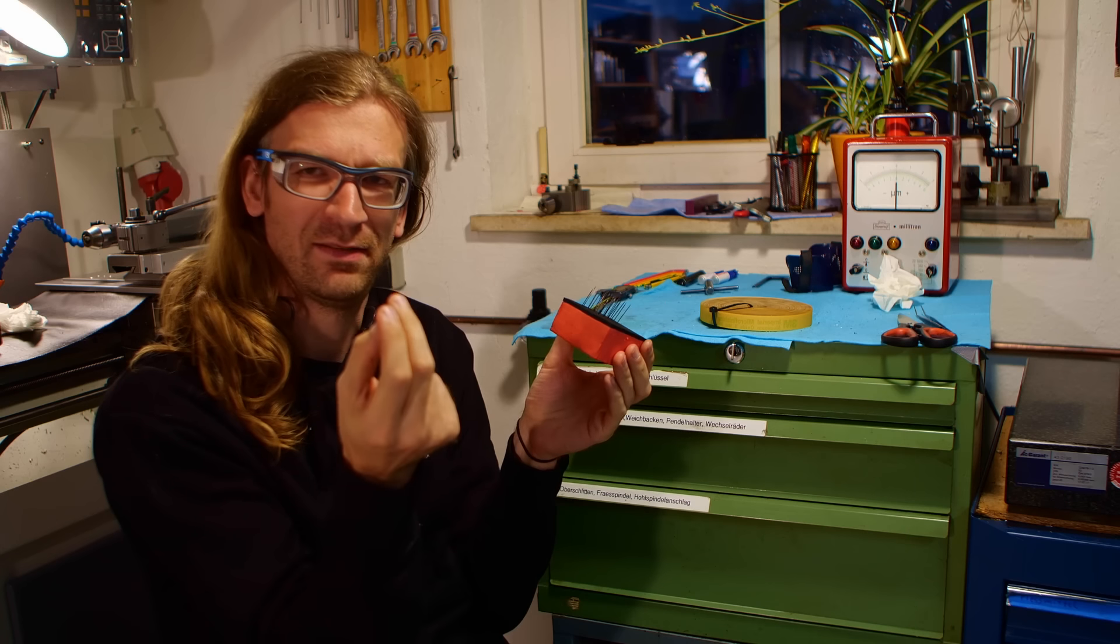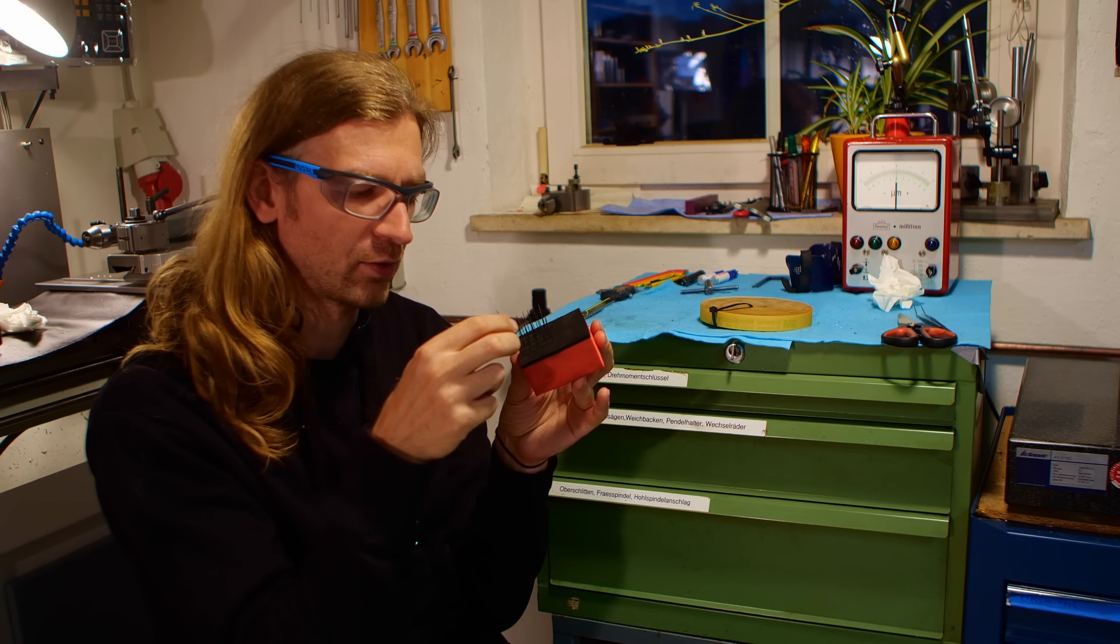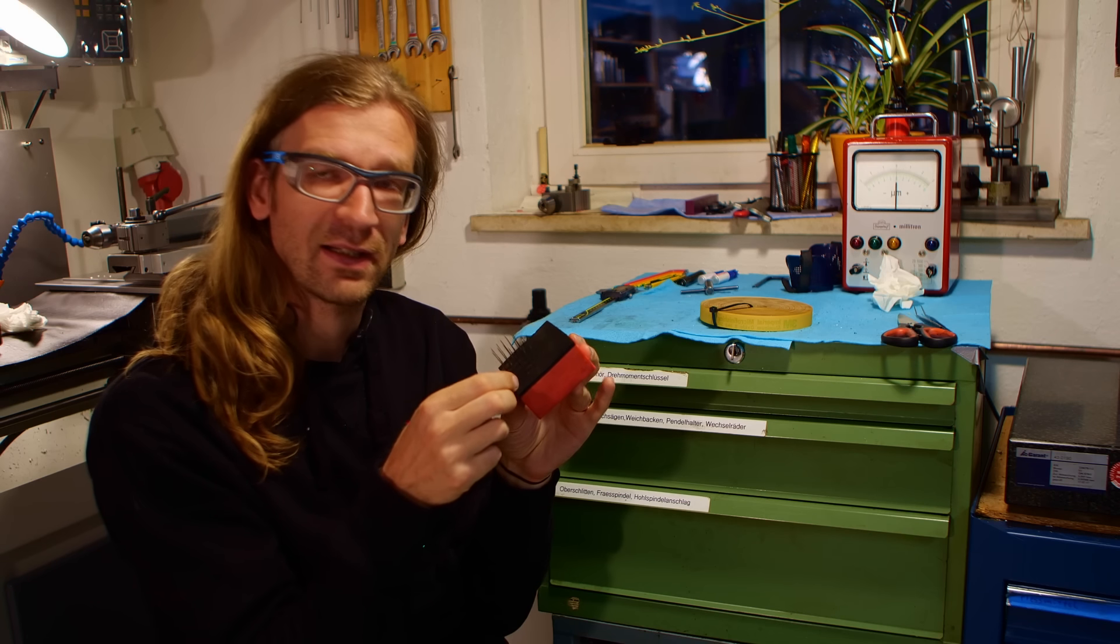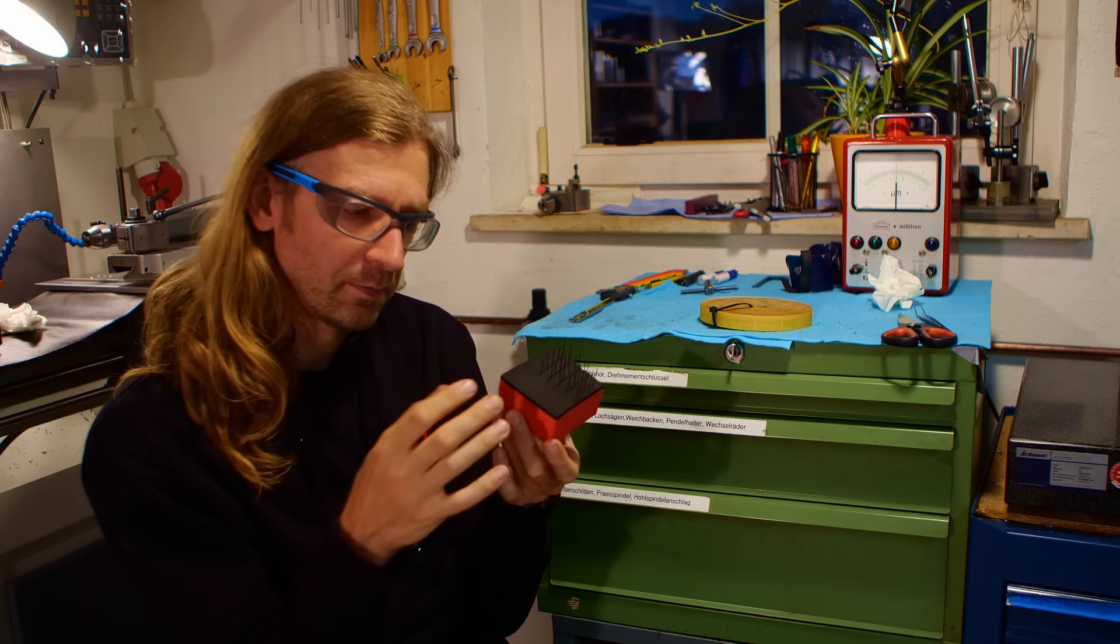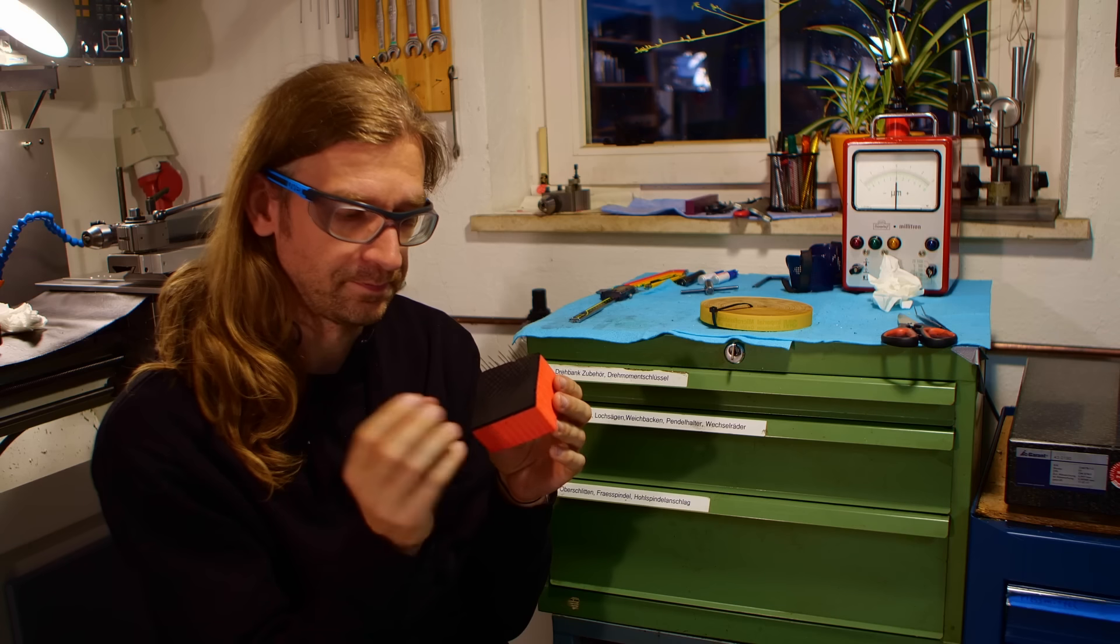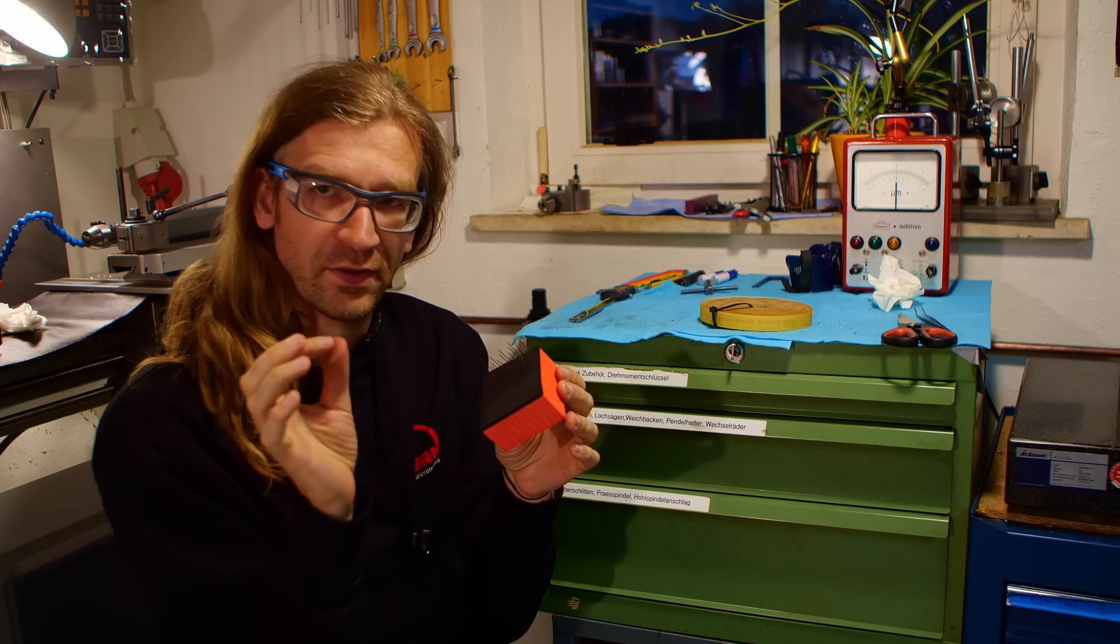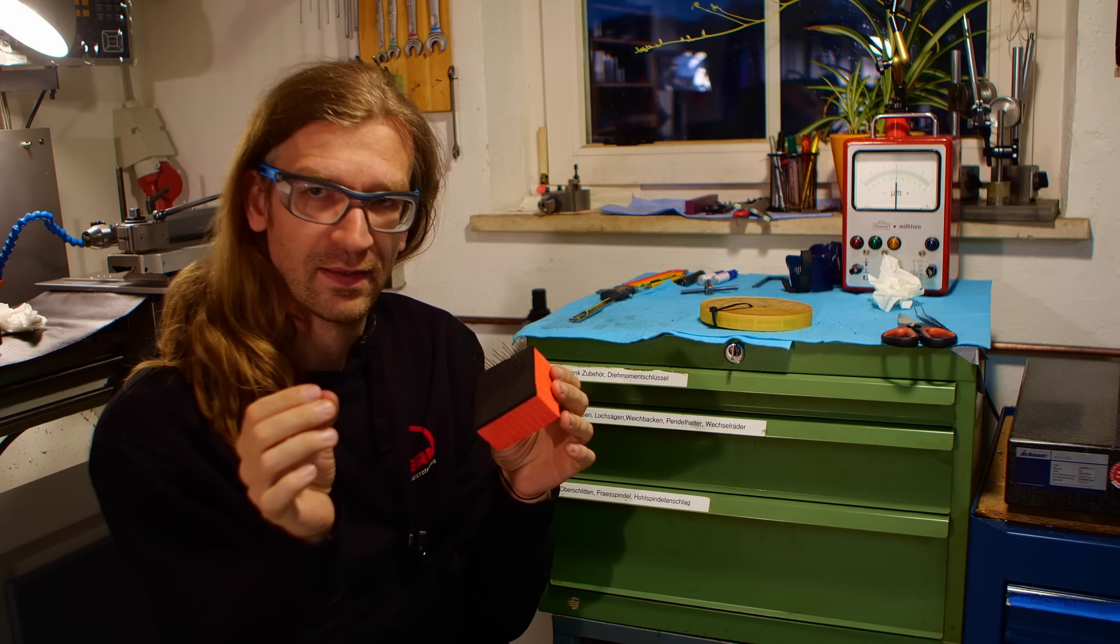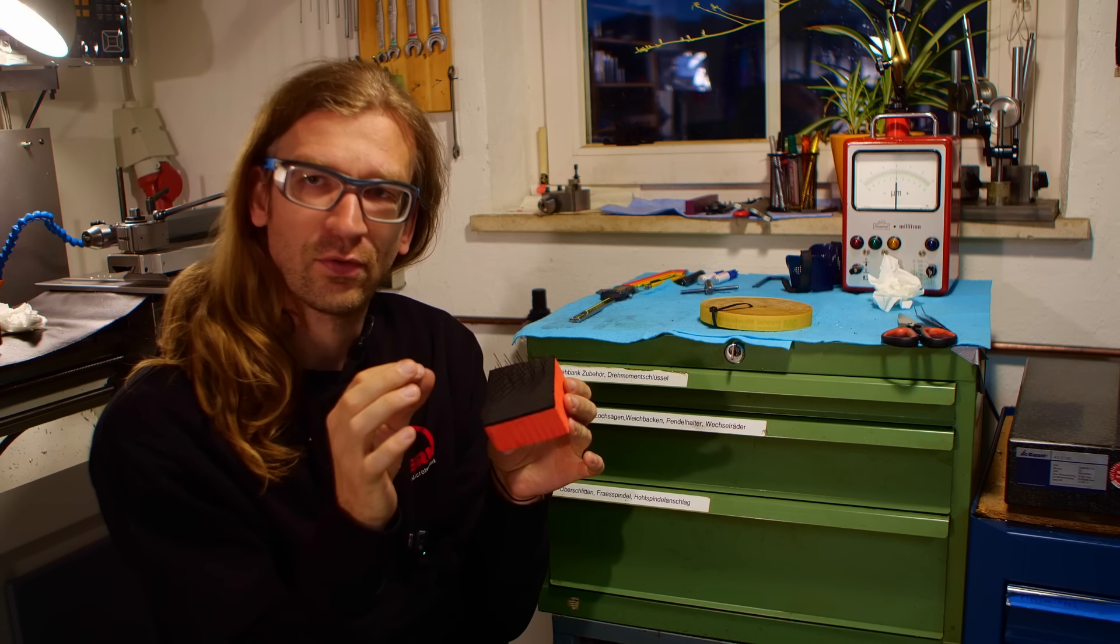They look like tiny TIG welding electrodes and in fact they are also made out of tungsten, just like a TIG welding electrode. But they are needles for a flux capacitor to adjust the flux and time with pinpoint accuracy.